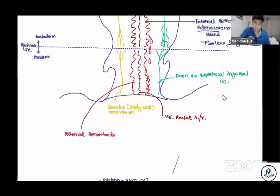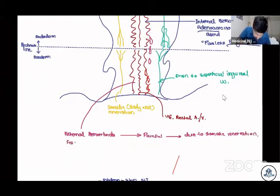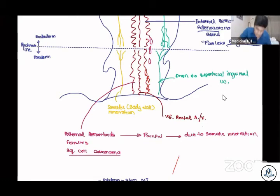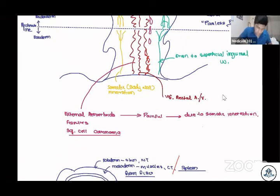External hemorrhoids occur below the pectinate line and are painful due to somatic innervation. External hemorrhoids are also associated with fissures and squamous cell carcinoma. Squamous cells are typically found in the skin — think of this region as closer to the skin.